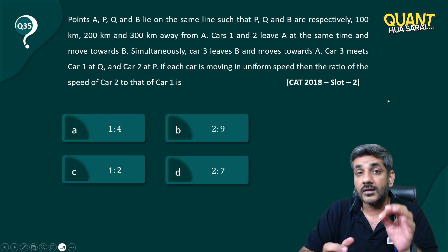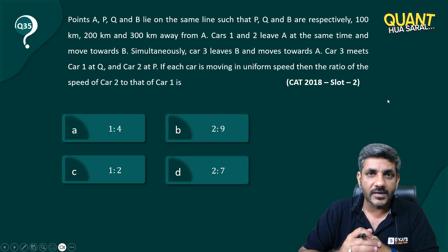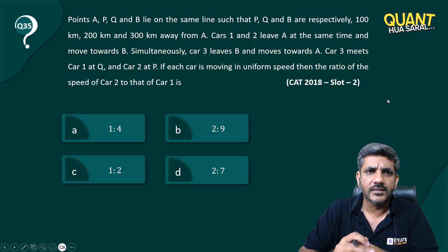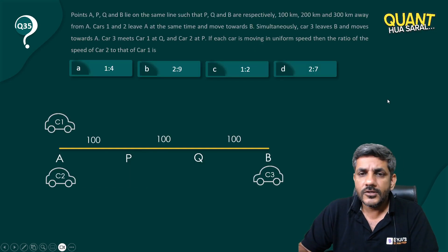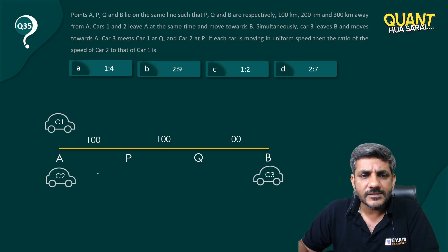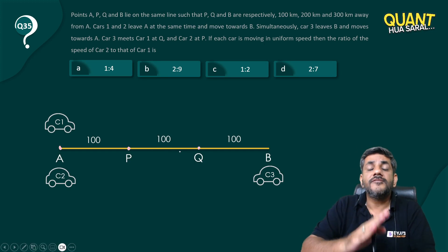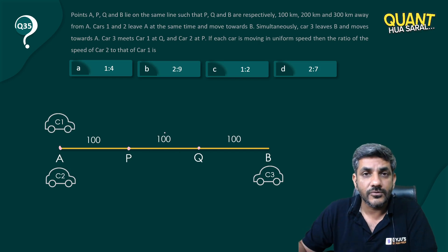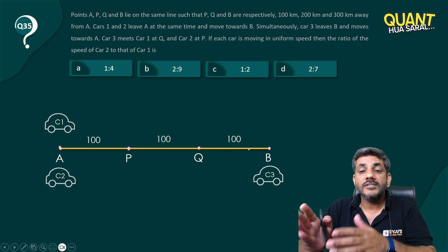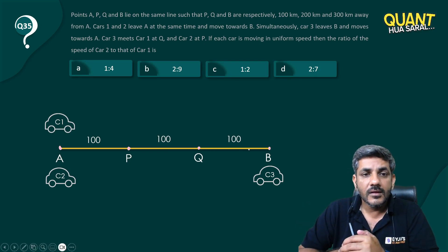Let's just visualize the process. From point A, 100 kilometers away I have P, 200 kilometers away I have Q (that is further 100 away from P), and 300 away from A (that is further 100 away from Q) is point B from which C3 starts.